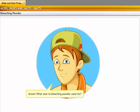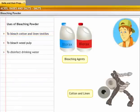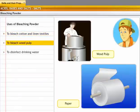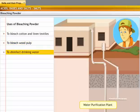Great! What else is bleaching powder used for? It is used to bleach cotton and linen textiles and to bleach wood pulp and even used in the manufacture of paper. Bleaching powder is used to disinfect drinking water and make the drinking water clean and safe.